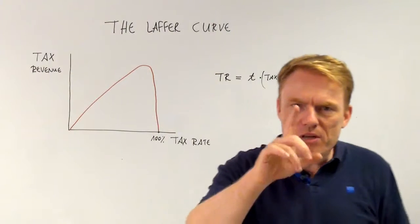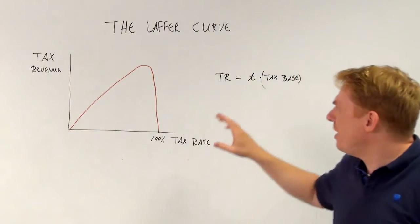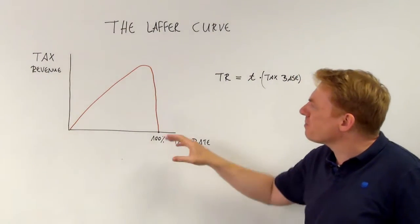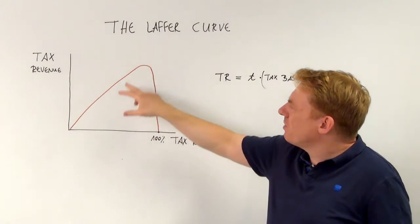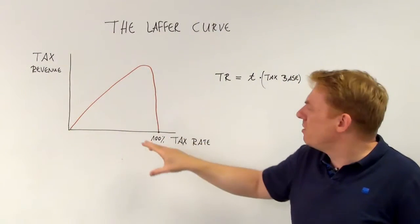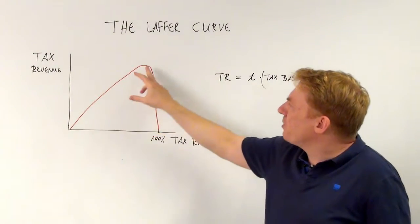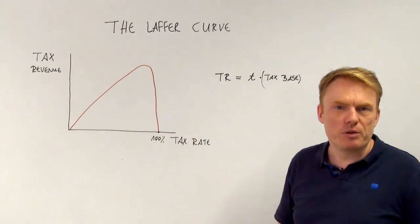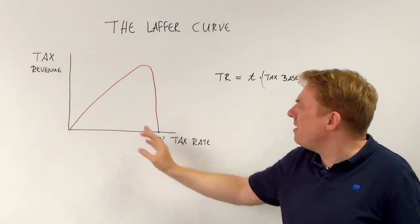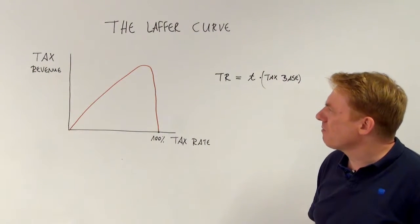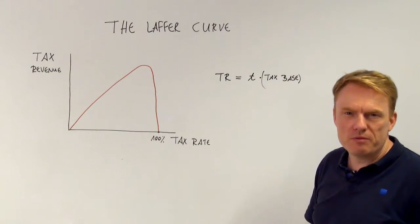But what was new about this equation is to know that there is an upward sloping curve and a downward sloping curve after a certain tax rate, which is what was called the Laffer curve.